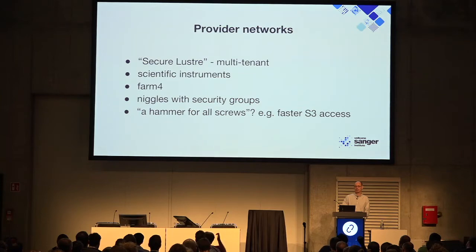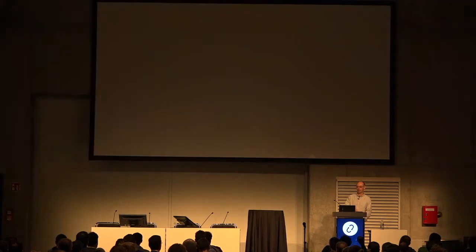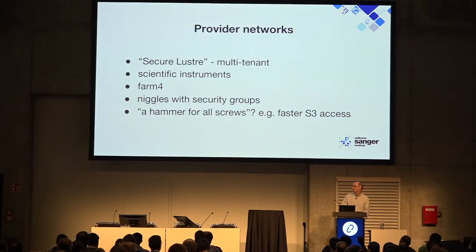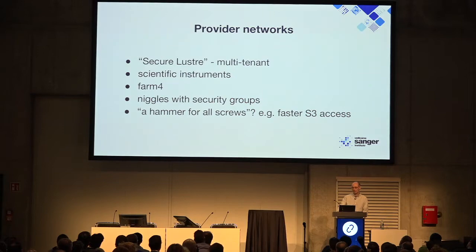We've had some interesting niggles with security groups. If you try to deploy an instance with a port on an ordinary tenant network and a provider network with port security turned off, it doesn't work — you have to do it in two steps: add the tenant port, then add the provider network port. My personal concern is that provider networks are a hammer hitting a screw — you can solve lots of problems, but you're stepping away from the software-defined network.